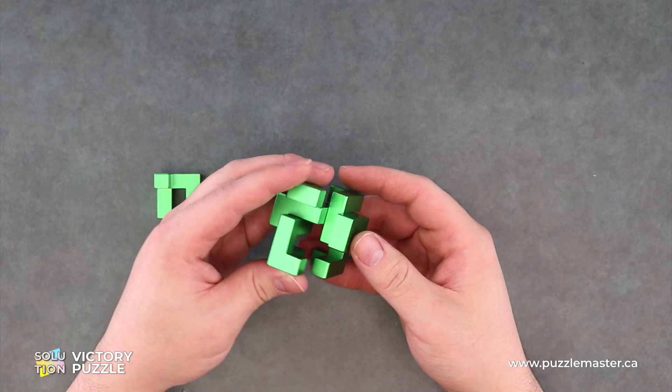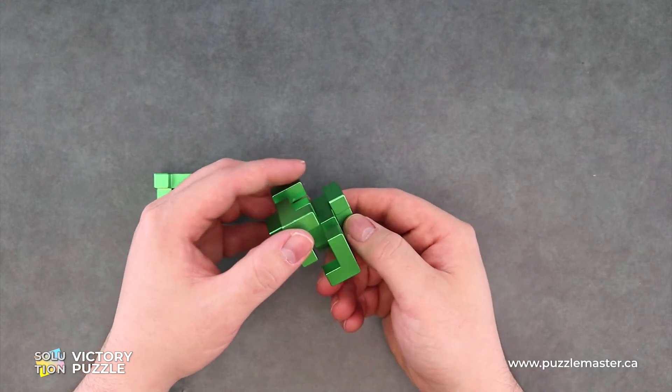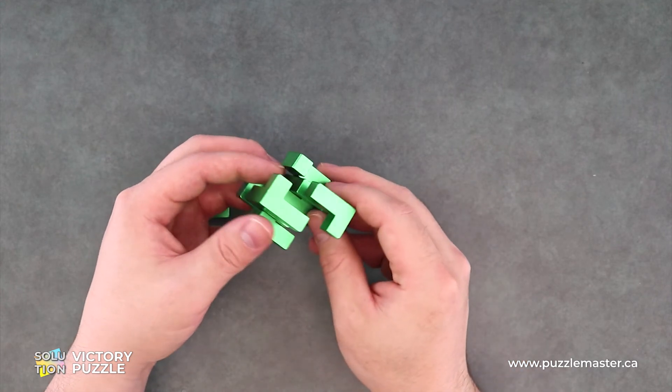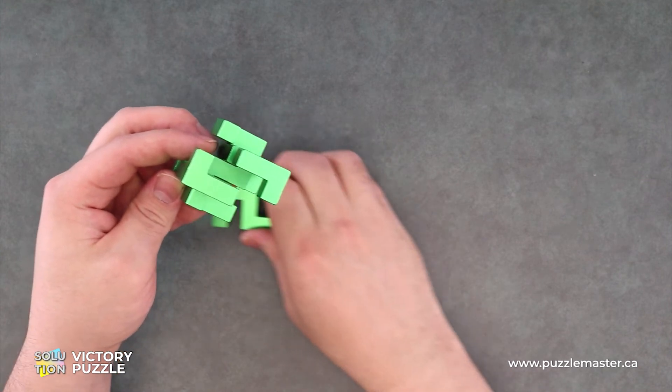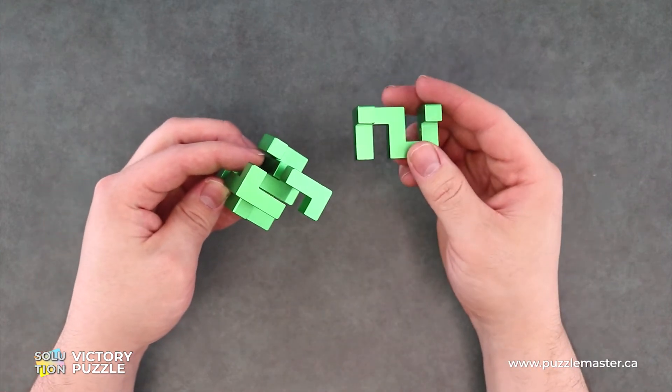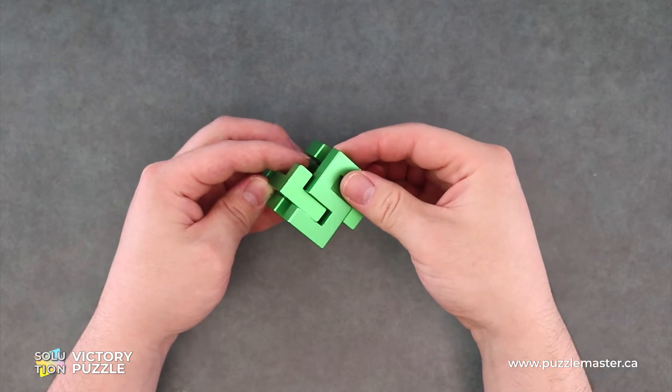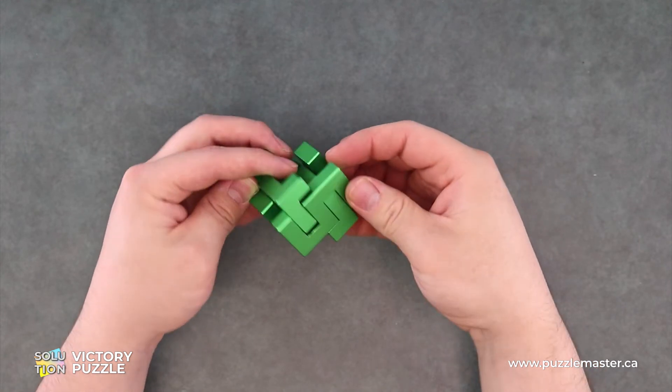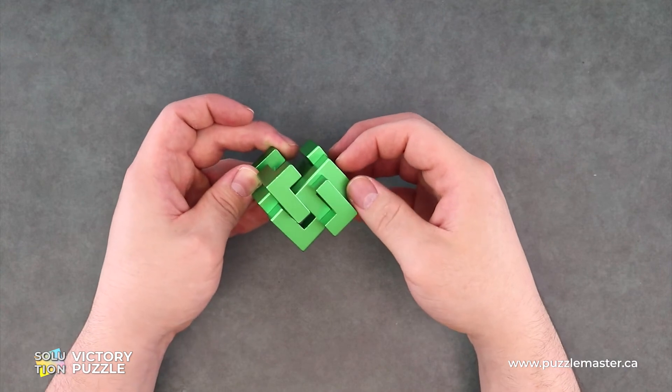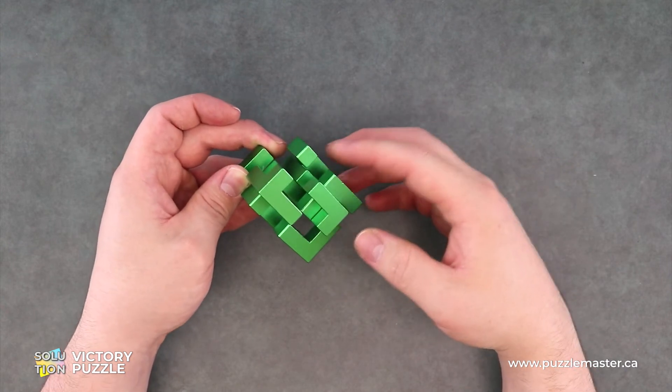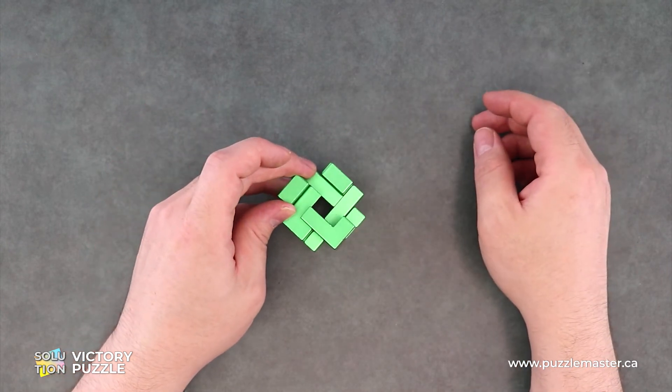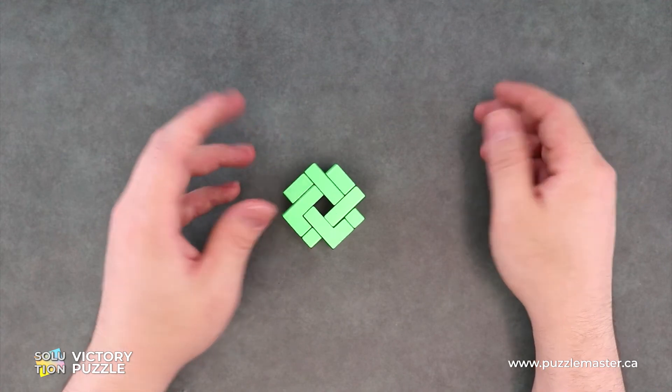Now this looks like what we had from the start. So we'll just find our side like this, and our last piece will slide in the side. Like so. And down. Then to reassemble fully, you can just drop it.